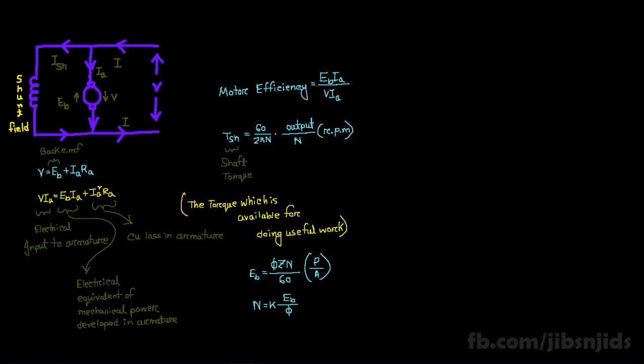Besides, speed of DC motor is equal to K times EB by phi, and percentage speed regulation can be obtained from this equation.